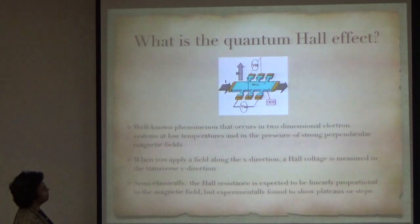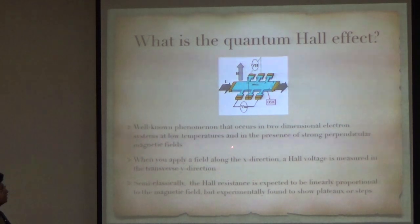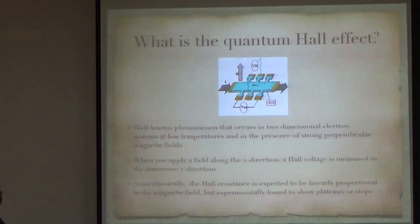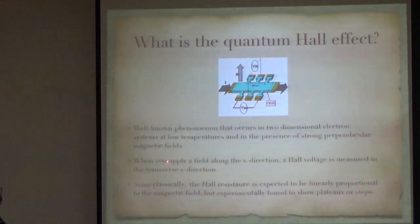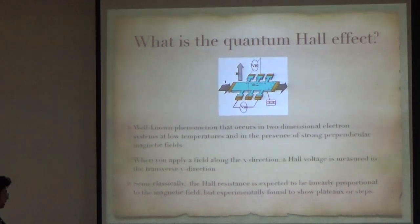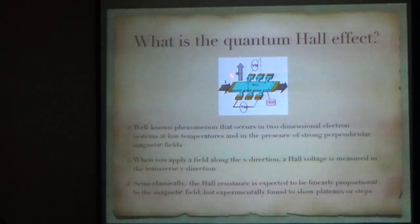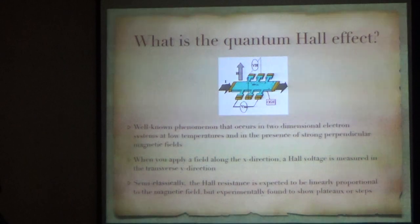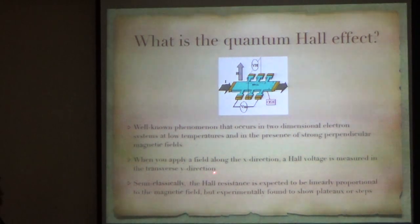Let me start with what is the quantum Hall effect. It's a well known phenomenon that occurs in two dimensional electron systems at low temperatures and in the presence of strong magnetic fields. When you apply a field along the x direction, a Hall voltage is measured in the transverse y direction, and the magnetic field is in the perpendicular z direction.